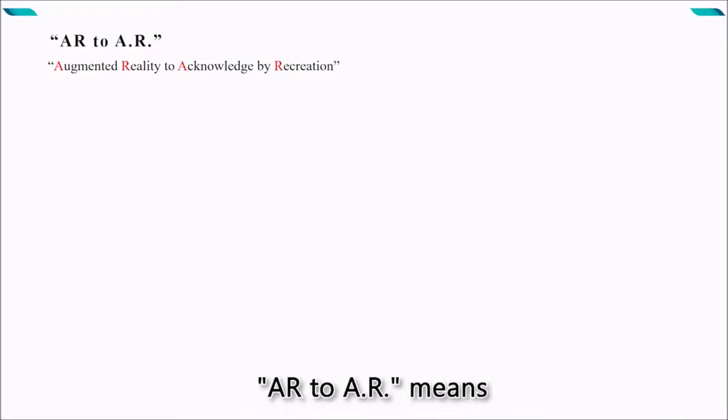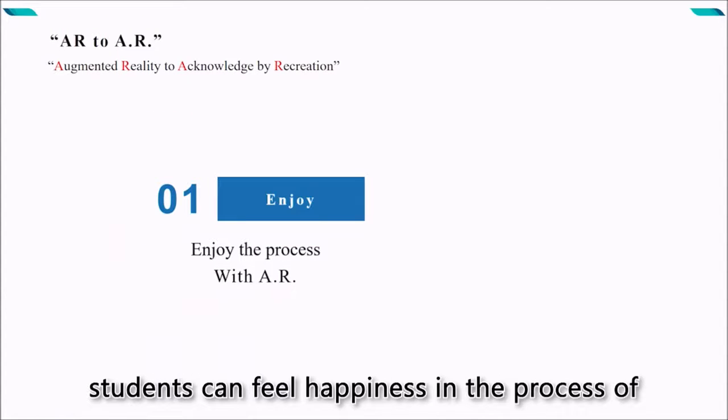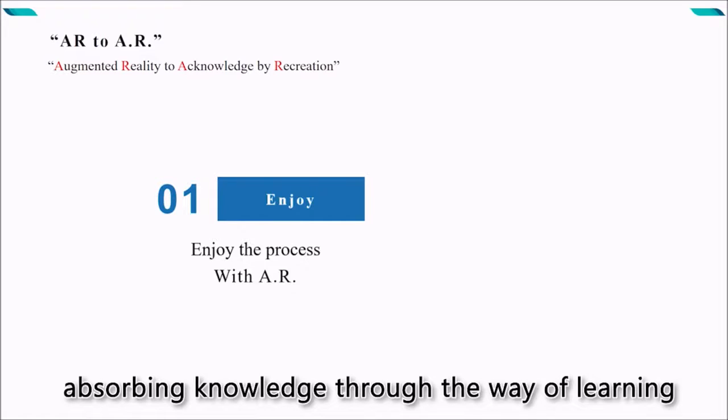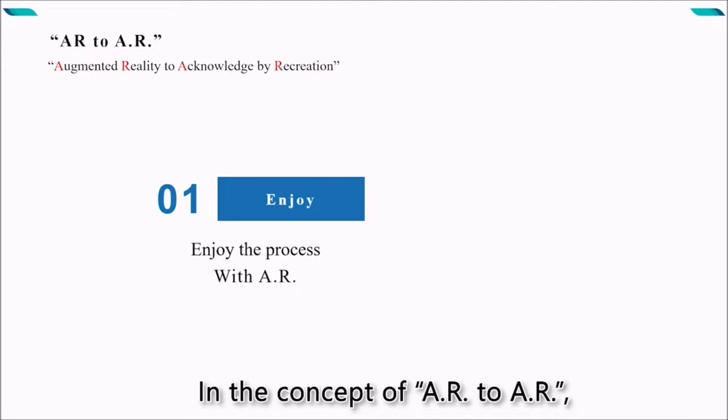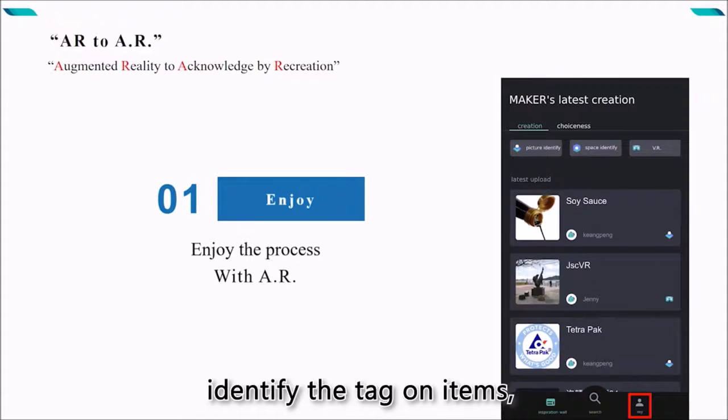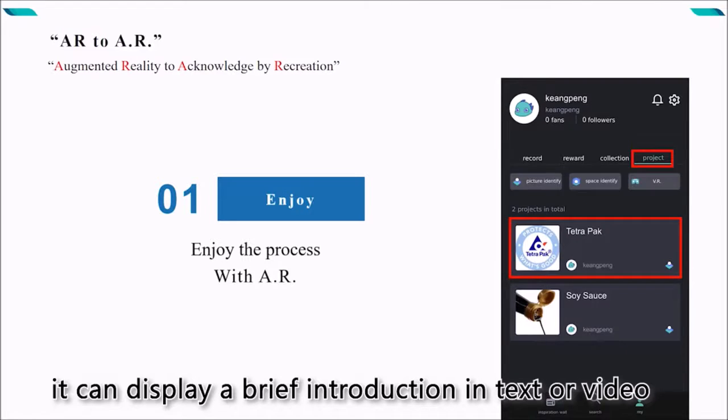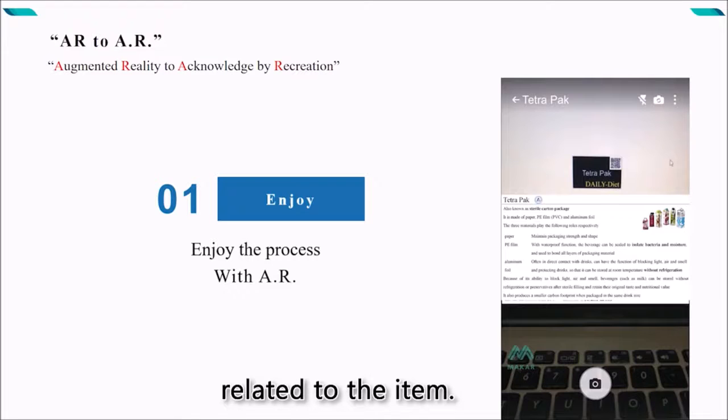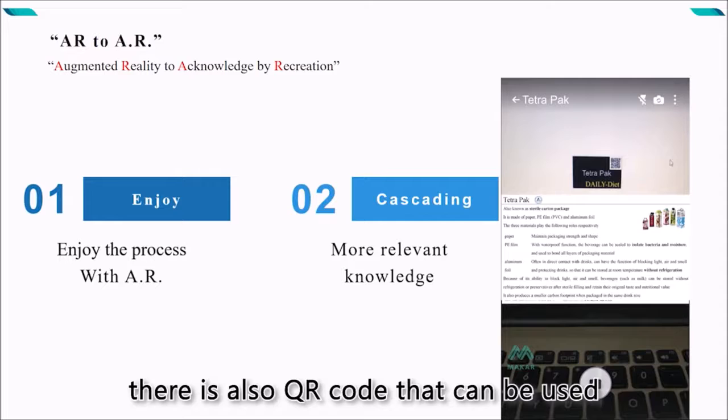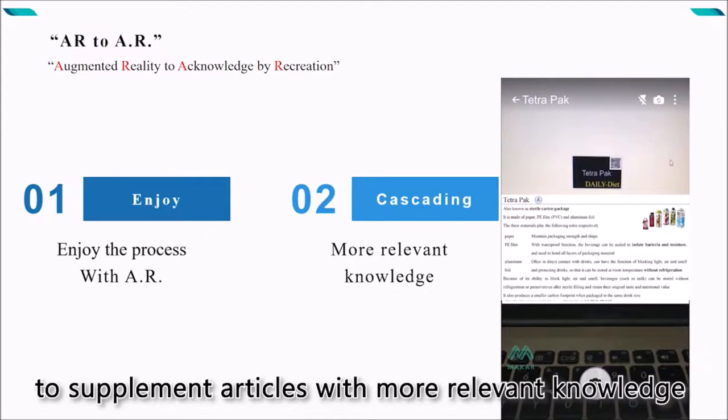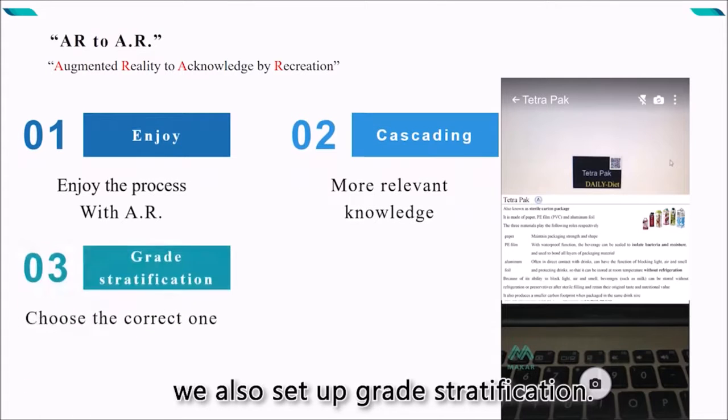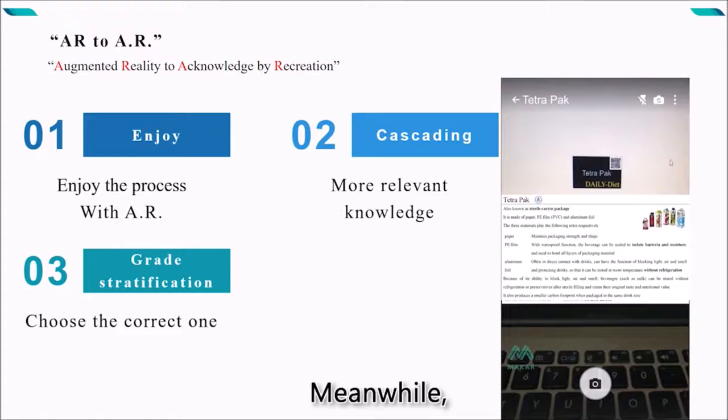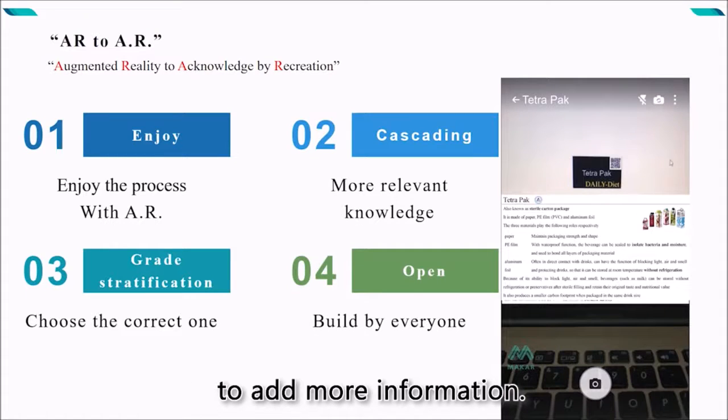Synopsis. AR to AR means augmented reality to acknowledge by recreation. The implication is that students can feel happiness in the process of absorbing knowledge through learning with AR technologies and begin to enjoy this process. In the context of AR to AR, we use the AR system with markers to identify the text on the items. It can display a brief introduction in text or videos related to the items. Besides the brief introduction, there is also the QR code that can be used to supplement articles with more relevant knowledge and other applications for students who want to know more. In addition, we also set up grade certifications. Meanwhile, AR to AR platform is open for everyone to add more information to them.